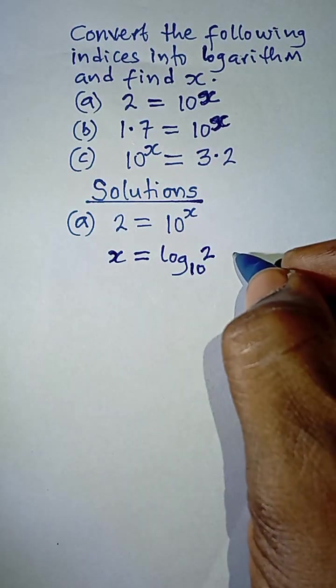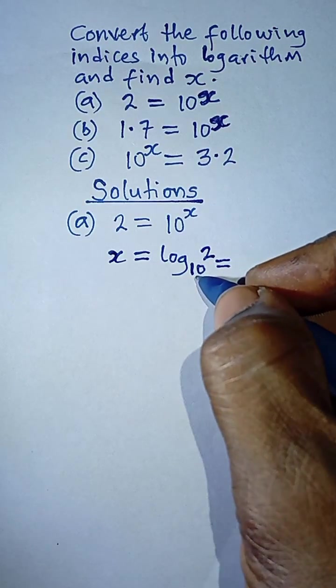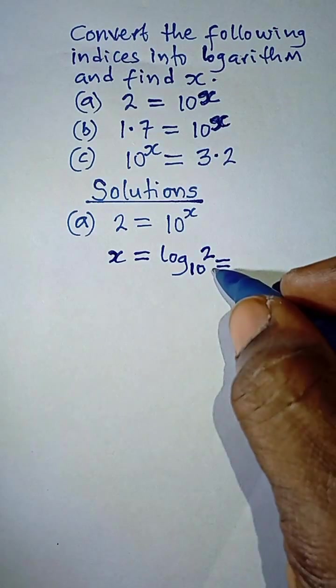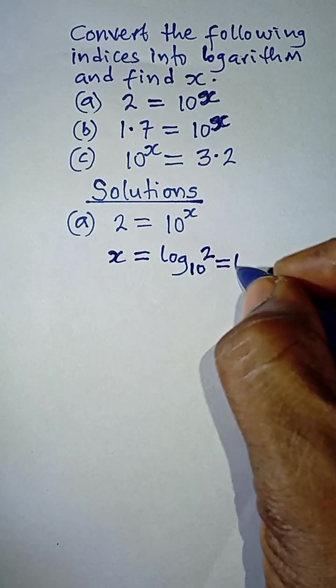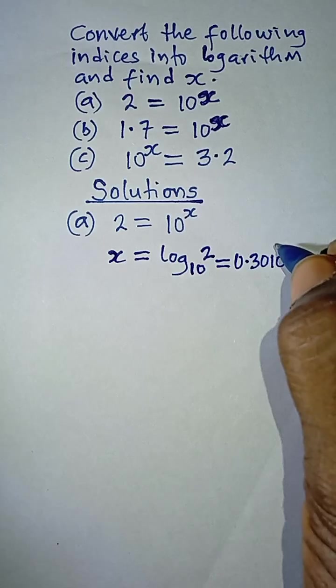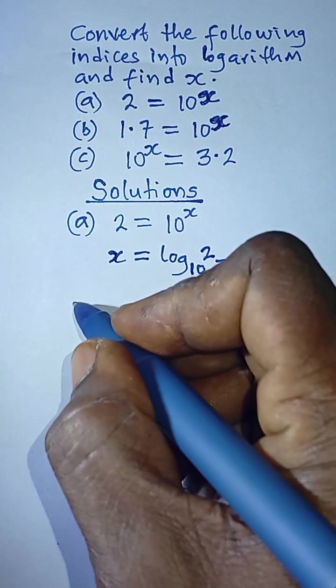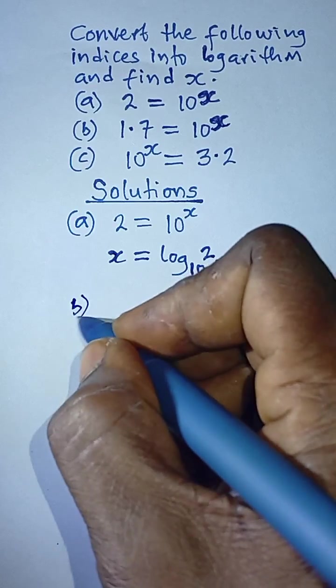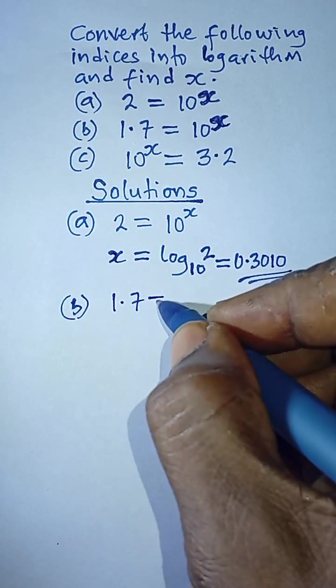So the answer becomes the logarithm of 2. If we check from our calculator, the logarithm of the number 2 is 0.3010, and this is the final answer. Now let's check the second question. It says 1.7 is equal to 10 raised to power x.